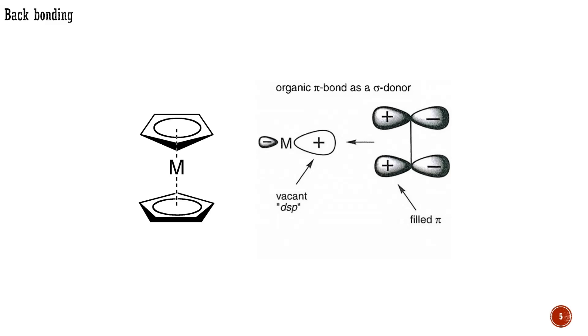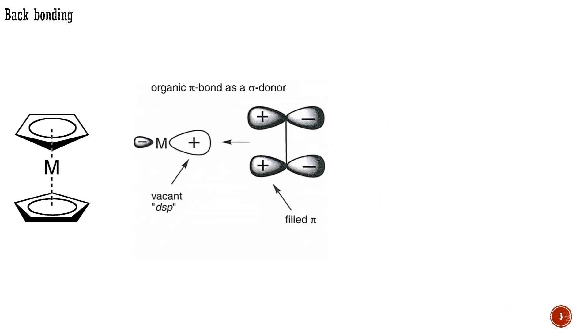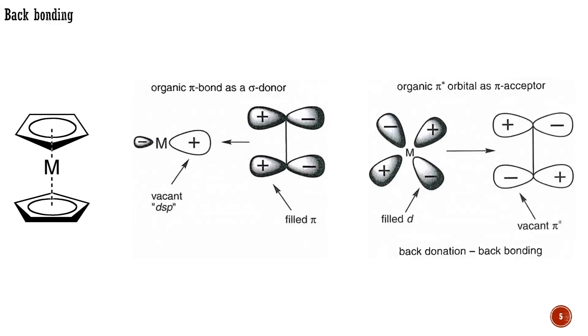They too form sigma bonds by overlap of their filled π-bonding orbitals with the vacant dsp-hybrid orbitals of the metal. In addition, filled d-orbitals of the metal can overlap with the vacant π-antibonding orbital of the ligand, back-donating electron density from the metal to the ligand. It may seem paradoxical that an antibonding orbital can form a bond, but this orbital is only antibonding with respect to carbon atoms in the unsaturated organic ligand and can still be bonding with respect to the coordinating metal.